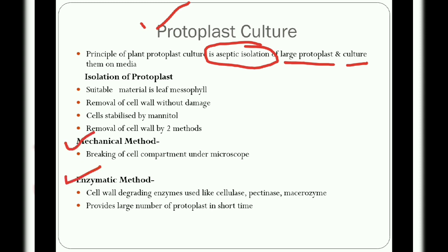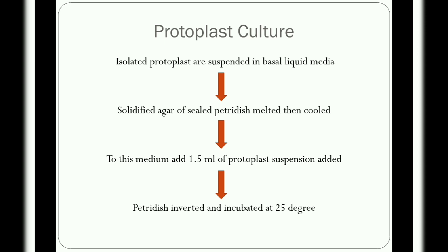The cell wall is removed by two methods: mechanical and enzymatic. In the mechanical method, each cell compartment is carefully broken under the microscope using a micro-scalpel. Very few protoplasts are obtained with a lot of time and effort, and isolated protoplasts are immediately used in culture. The enzymatic method is more efficient — the cell wall is degraded by enzymes such as cellulase, pectinase, and mesozyme, providing a large number of protoplasts within a short period.